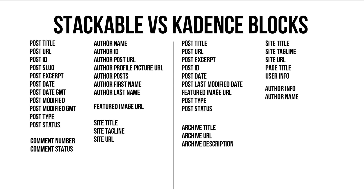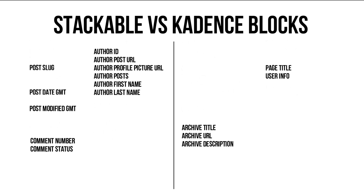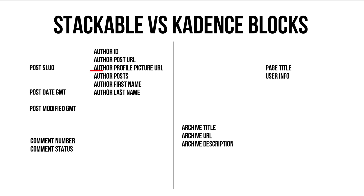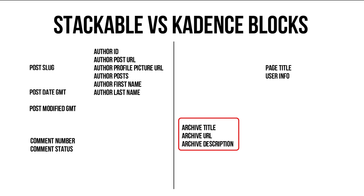Let's list all the dynamic fields from both plugins and reduce them to the unique ones. By looking at this overview, it seems Stackable has more dynamic fields than Cadence Blocks. Stackable provides dynamic author fields to customize your author pages, but the profile picture is missing — it only shows the link. For Cadence Blocks, there aren't many author fields, but it provides fields to customize your archive pages such as category pages and the blog roll. Each block plugin has a different focus, but what sets Cadence Blocks apart is that dynamic content has been incorporated directly into some of its blocks.